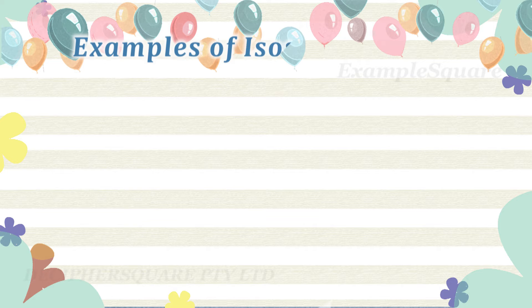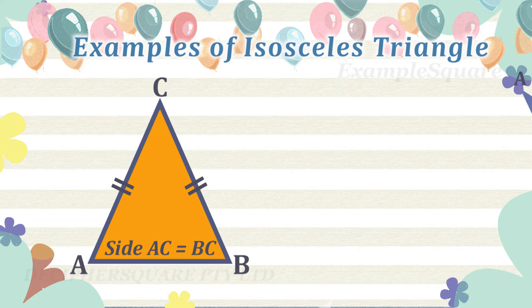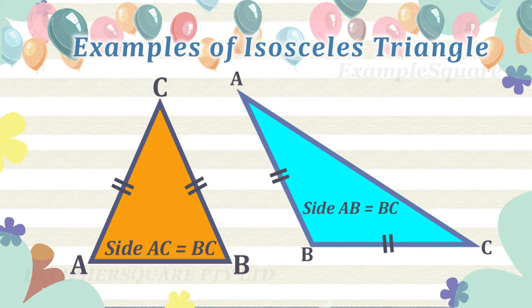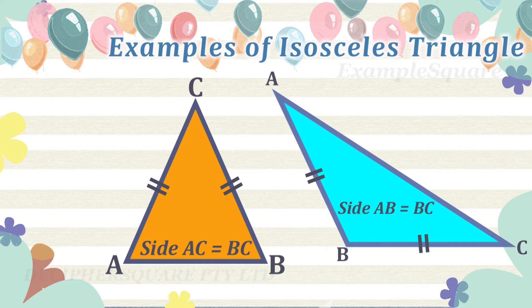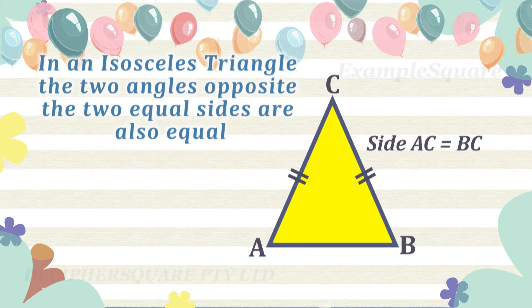These are some examples of an isosceles triangle. In an isosceles triangle, the two angles opposite the two equal sides are also equal.